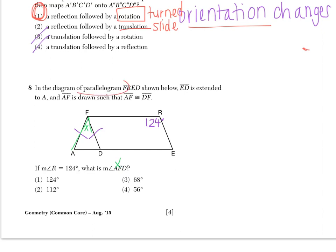So because we have a parallelogram, we know a lot of things. But as far as angles go with a parallelogram, we know that opposite angles are congruent and adjacent angles are supplementary. So here, if I'm looking at this parallelogram F-R-E-D, I know that the angle opposite of R is also 124 degrees.